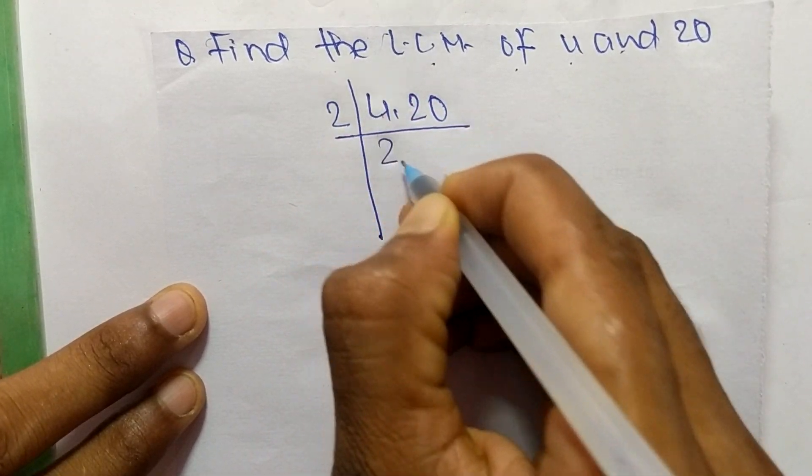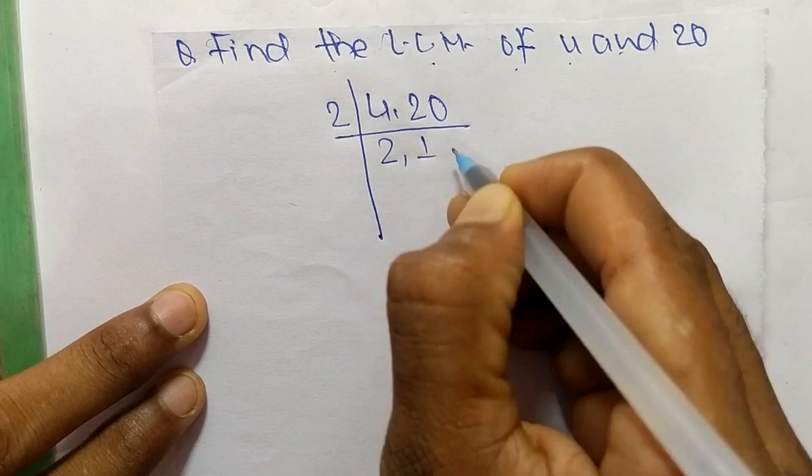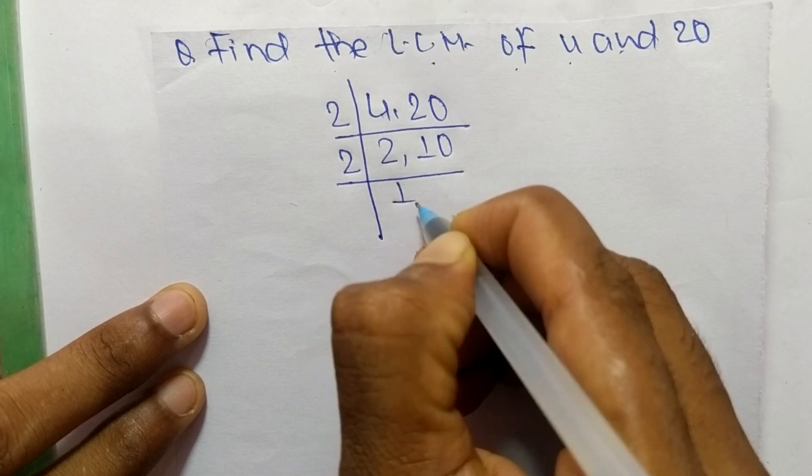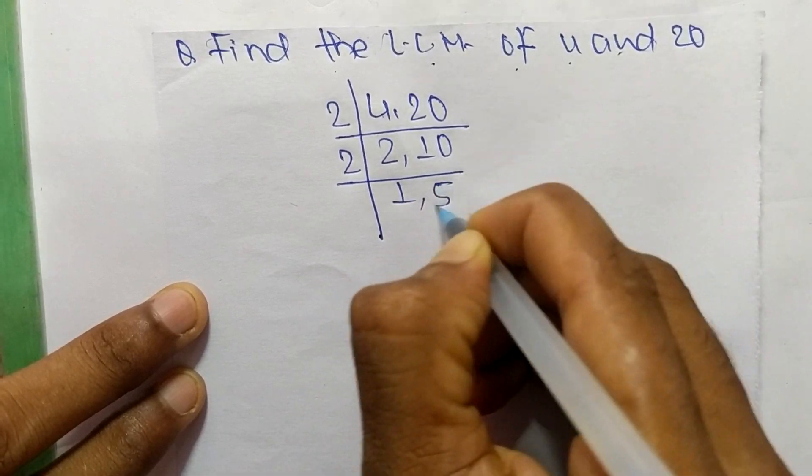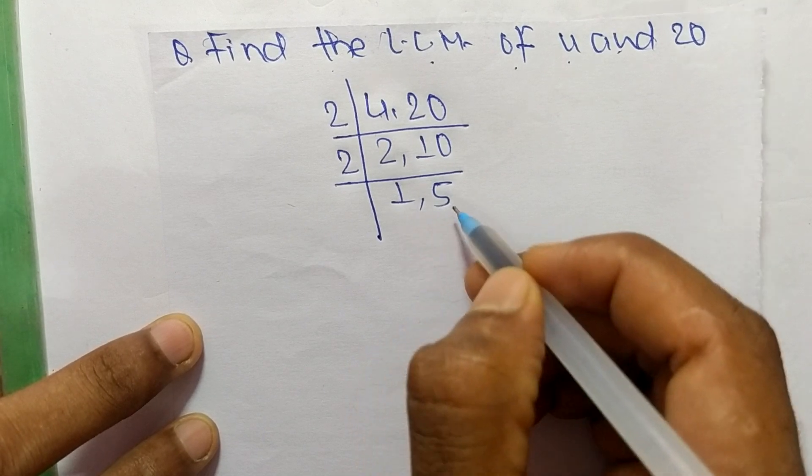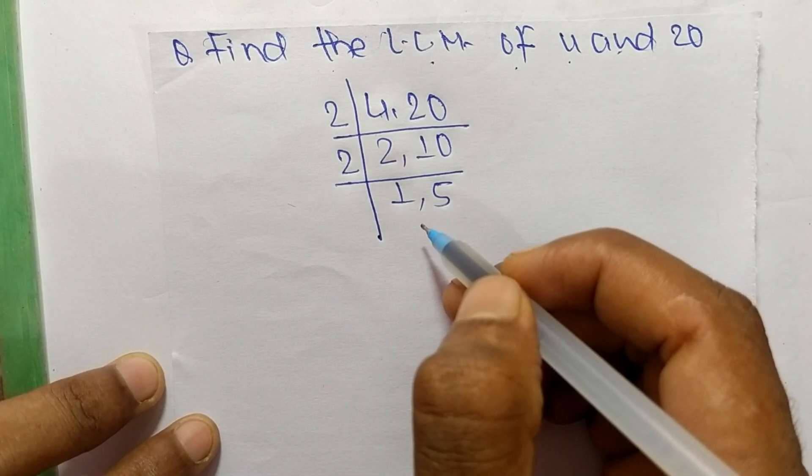So it is 2 times 2 means 4, and 2 times 10 means 20. Like 2 times 1 means 2, and 2 times 5 means 10. So now we get here 1 and 5, which are not exactly divisible by the same number.